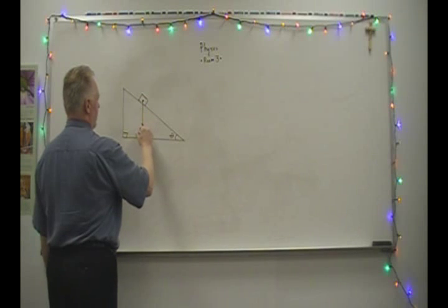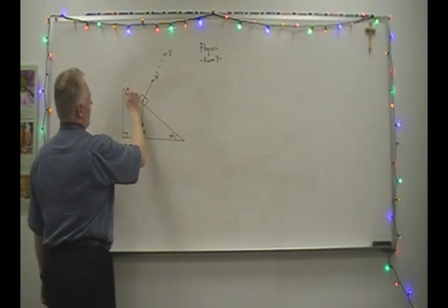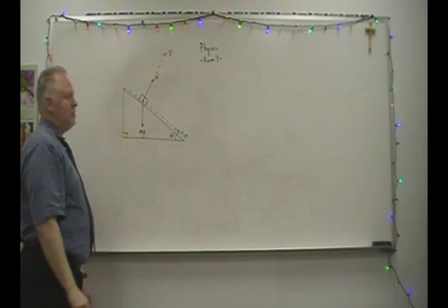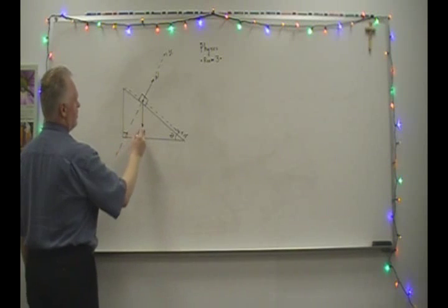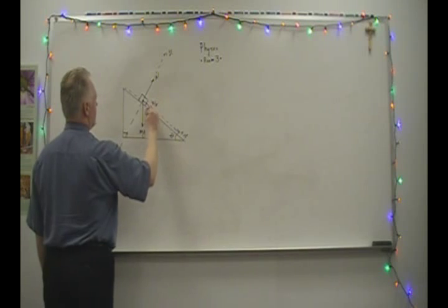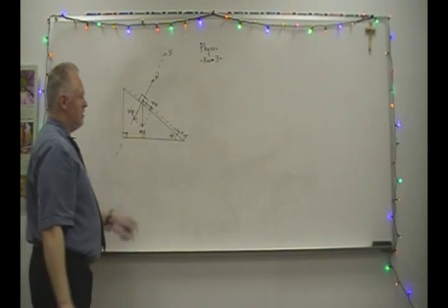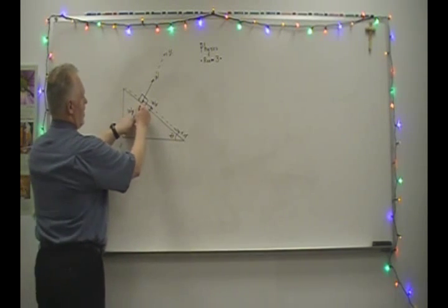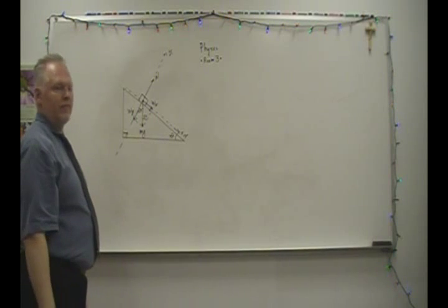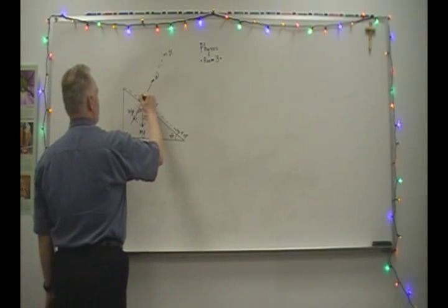Recall that weight points straight down — mg. The normal force is perpendicular to the surface; I'll make that my y-axis. I'll make down the incline my positive x-axis, so it's a tilted coordinate system. This allows me to break up the weight into its x-component Wx and its y-component Wy. This angle corresponds to the angle between the y-axis and the weight vector. Let's assume there's friction holding this block in place — it's not moving. That friction is known as static friction.